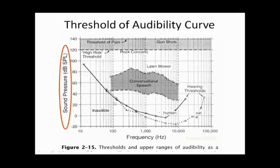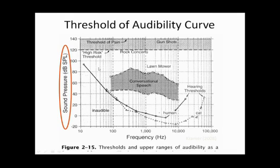Human hearing is most sensitive in this middle frequency range, and this is the range that we're going to test with the audiogram. Here is the speech banana. Notice it's a little bit upside down because on this scale a low level is at the bottom and a high level is at the top — that's the opposite of what we have for the audiogram. Anything above the threshold is audible: rock concert, lawn mower, conversational speech are all audible. But anything below the threshold is inaudible.